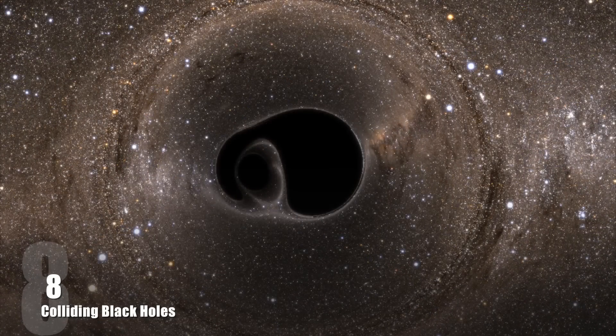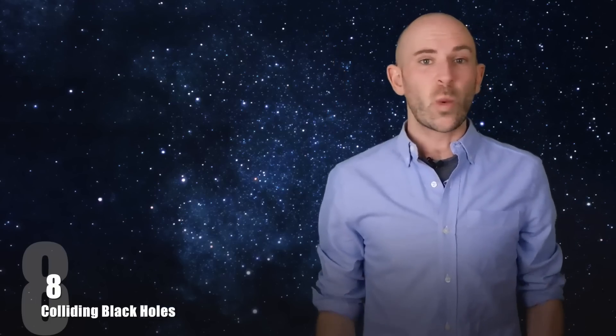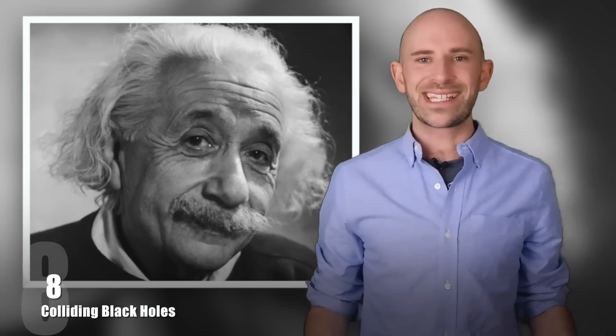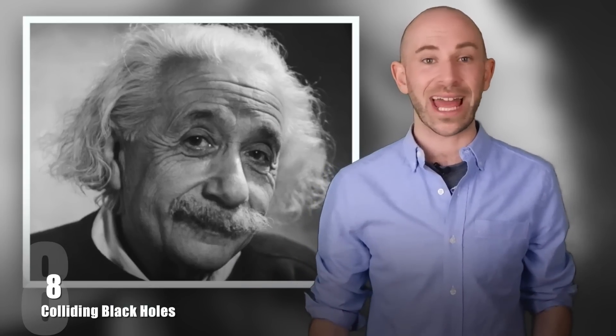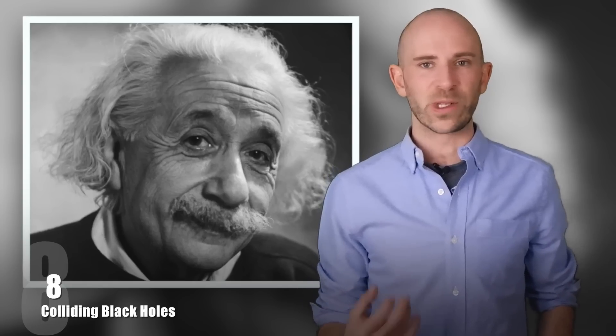When they combined, some of the mass was converted to energy and the energy emitted was gravitational waves. Gravitational waves were first theorized by Einstein and they are a disturbance in the cosmos that could cause space-time to stretch, jiggle and collapse, which would produce ripples of gravity.